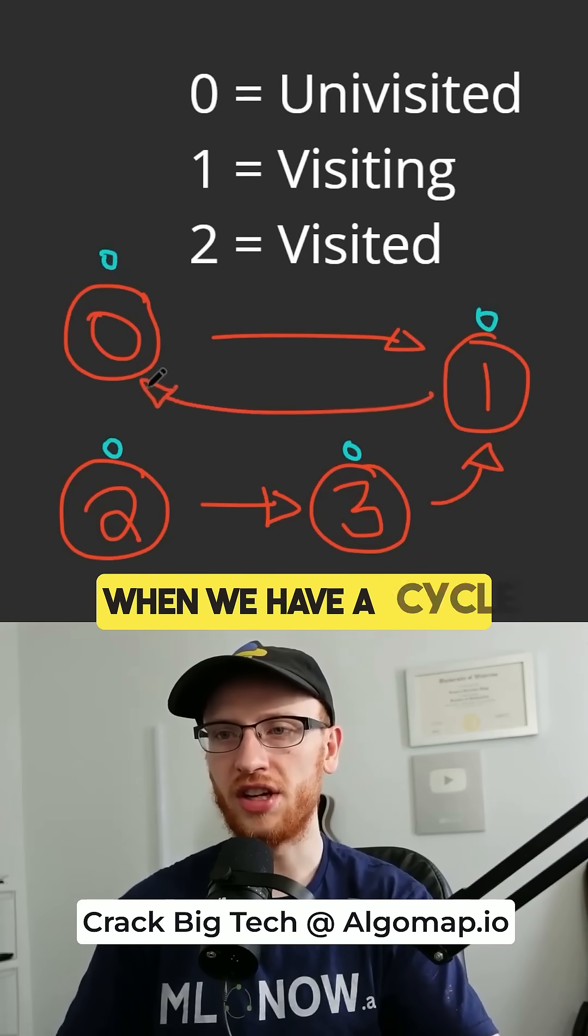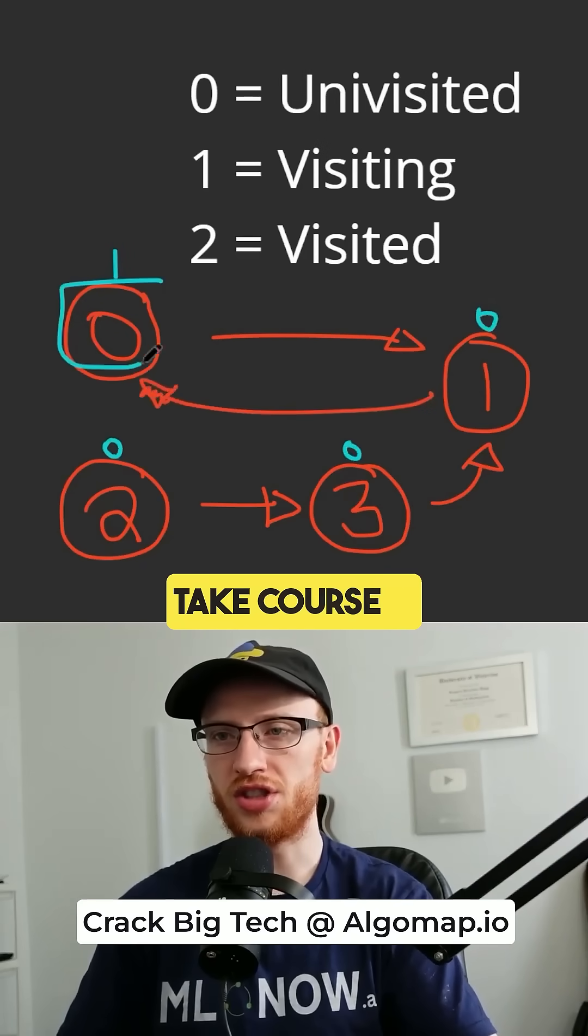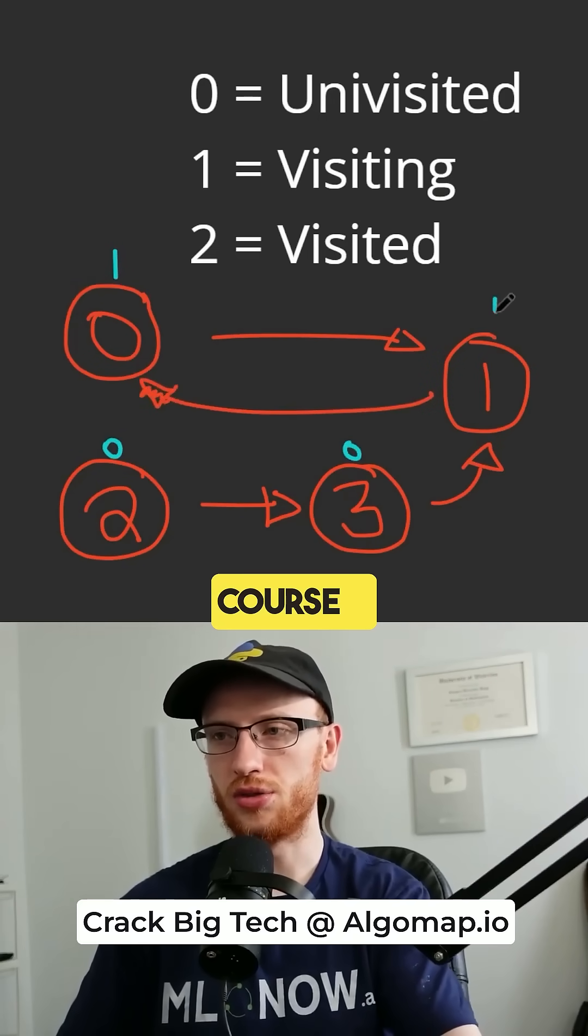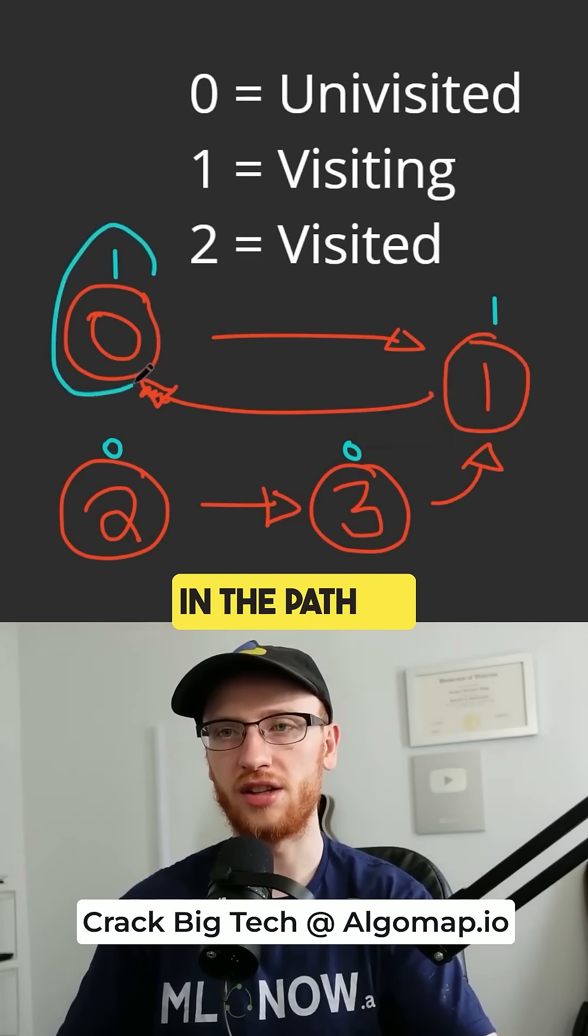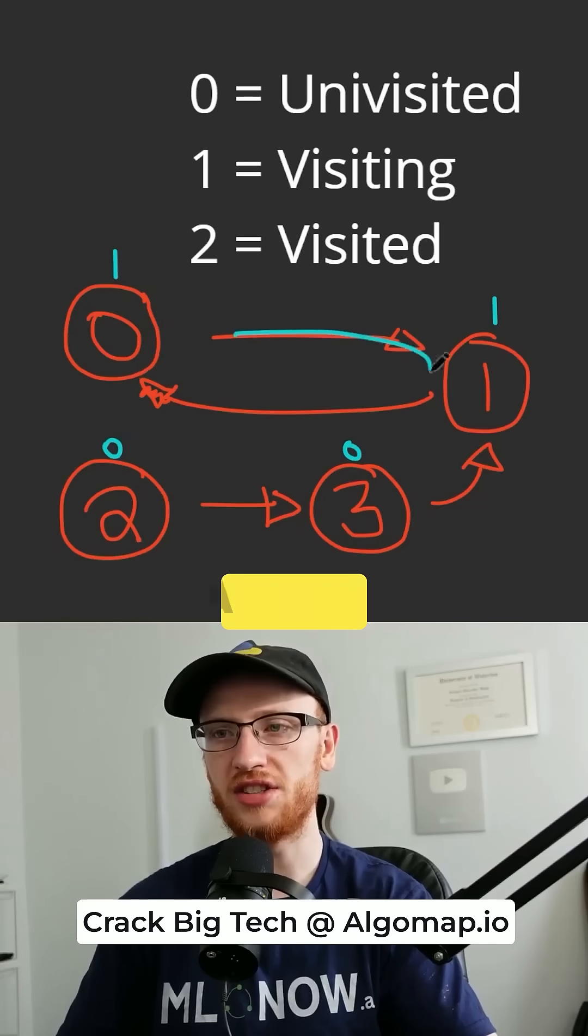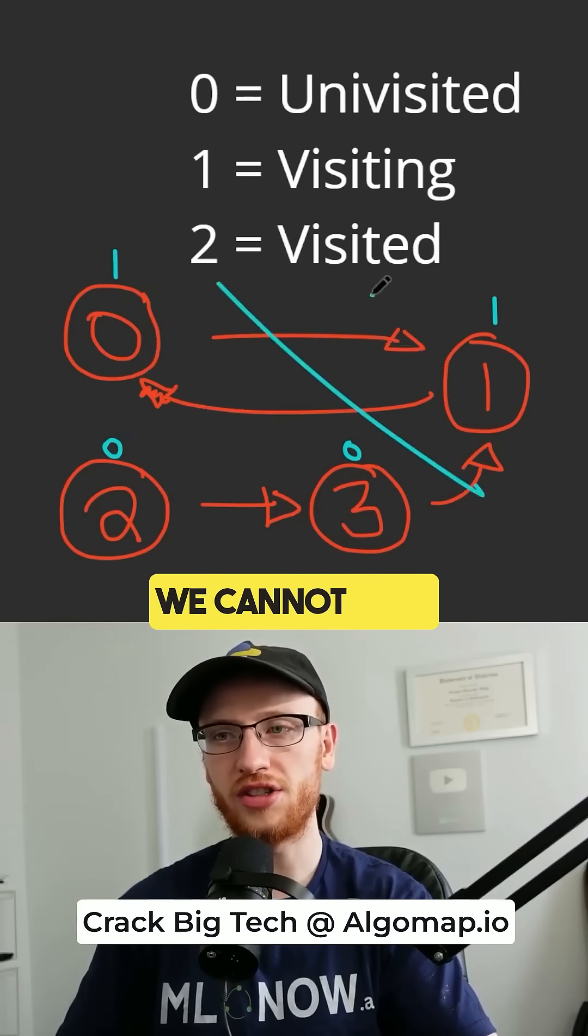Now a problem comes when we have a cycle in the graph. So we can take course 0 as long as we can take course 1, and we can take course 1 as long as we can, uh-oh, we're already in the path of visiting this, which defines a cycle in the graph. We cannot take all of the courses.